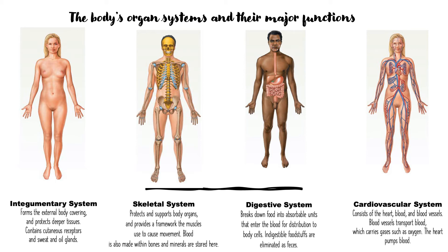The skeletal system is not just bone — cartilage is also involved. Its main jobs are to protect and support the body, protect the organs, and provide a framework for muscles to attach so movement can occur. Blood is actually made inside the bones. Minerals such as calcium are also stored there — if blood calcium is low, the body draws from this reservoir in the bones.